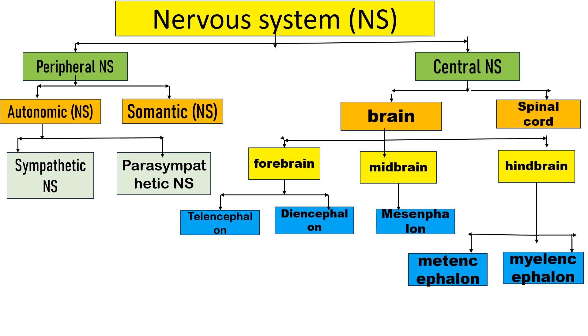The parts of the Brain are Forebrain, Midbrain, and Hindbrain. In the Forebrain, there is Telencephalon and Diencephalon. In Telencephalon, there is the Cerebral Cortex.